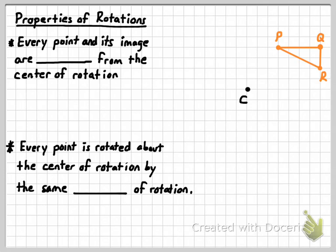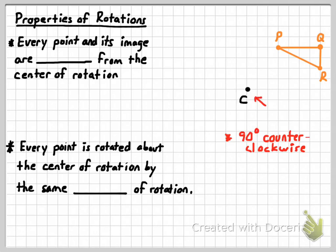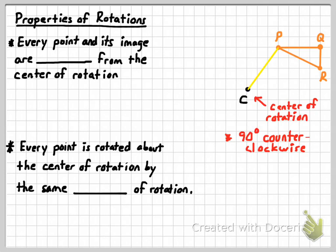I'm going to rotate 90 degrees counterclockwise. You can choose an infinite number of points to be the center of rotation. I'm going to use point C as the center of rotation — a point that's not part of the figure. We'll talk more about when the center of rotation is part of the figure in another example. Just like with translations where we used vectors, we can use line segments to aid us in rotating a figure. The mechanics are: connect the point you're rotating to the center of rotation. I'm going to connect P with the center of rotation and rotate that point first.